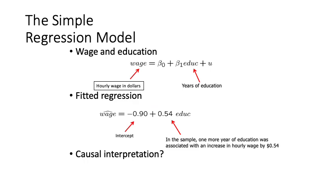Another example covers wages and education. We know wage has a positive relationship with education, measured by years of education. The fitted regression shows a negative intercept, which is not easy to interpret under causality, but education has a positive impact: one more year of education is associated with an increase in hourly wages of $0.54.